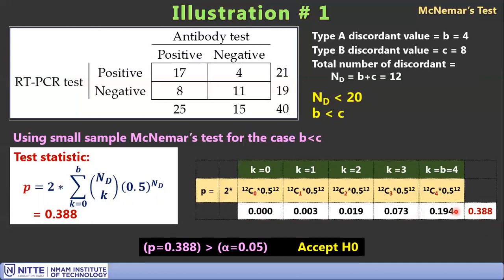The calculated p-value is 0.388, which is greater than α = 0.05. Therefore, we accept H₀. This means the outcomes of the antibody test and the RT-PCR test do not differ significantly — the two tests yield the same result, even though cell values differ numerically.